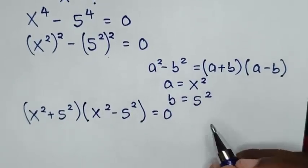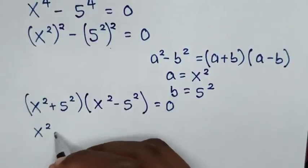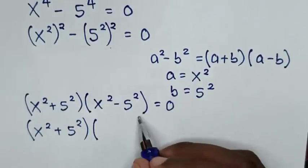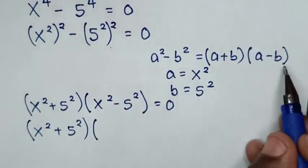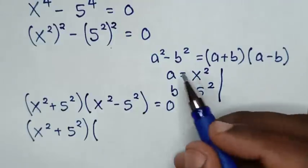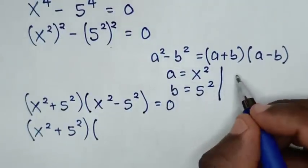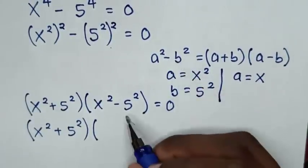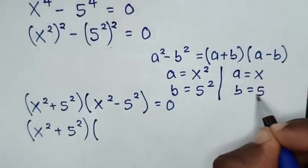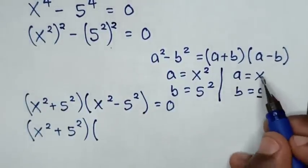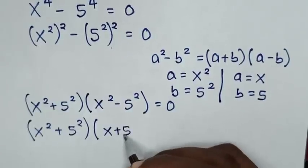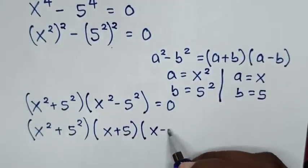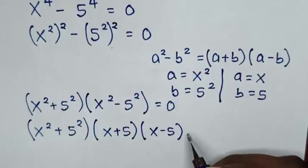Then in the next step, this equation becomes x squared plus 5 squared, times — this part is also in the difference of squares form. When we compare a squared with x squared, then a equals x. And when we compare b squared with 5 squared, then b equals 5. So a plus b gives x plus 5, times a minus b gives x minus 5, equal to 0.